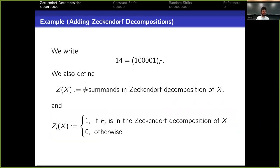In equations, we're going to write 14 as that string enclosed by parenthesis, sub F. And we're also going to be interested today in the number of summands in the decomposition of x, so we're going to define that as being z of x. Another variable that's going to be useful today is z sub i of x, which is going to be 1 if a summand Fᵢ is in the Zeckendorf decomposition of x, and 0 otherwise. So for example, we have the relation that z is the sum of zᵢ's.